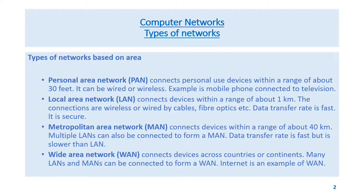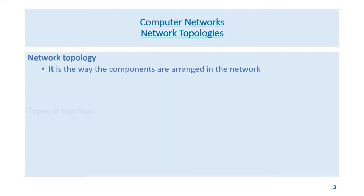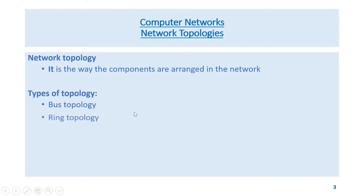Wide Area Network (WAN) connects devices across countries or continents. Many LANs and MANs can be connected to form a WAN. The internet is an example of WAN. Network topology is the way the components are arranged in the network. Types include bus topology, ring topology, and star topology.